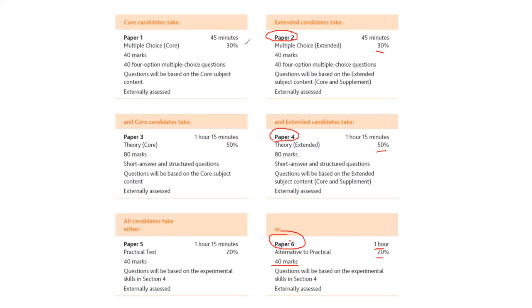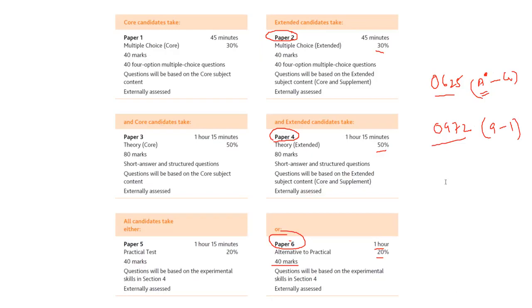So you will select Paper 2, Paper 4, and Paper 6. You can select either 0625 — scoring from A* to G — or 0972 — scoring from 9 to 1. Which grading system is better depends on the country where you want to continue your studies. Students from Egypt typically take numerical grading, while students from South Asia prefer alphabetical grading.